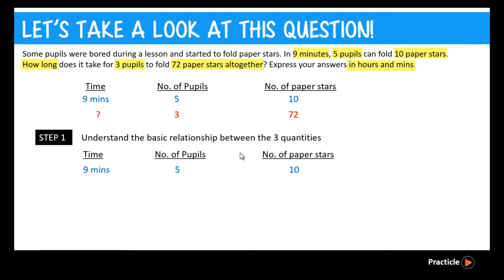Meaning that if one decreases, the other one will decrease as well. So since we get one student by taking 5 divided by 5, we can get the number of paper stars that are folded by taking 10 divided by 5 too. So we will get something like this. One pupil can fold 2 paper stars in 9 minutes.